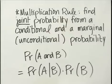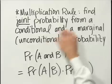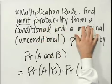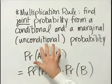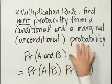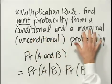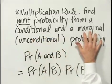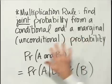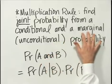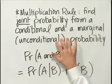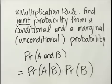The multiplication rule is a way to find the joint probability from a conditional and a marginal or unconditional probability. When I say marginal probability, I'm talking about an unconditional probability — that's a word often associated with unconditional in probability language.